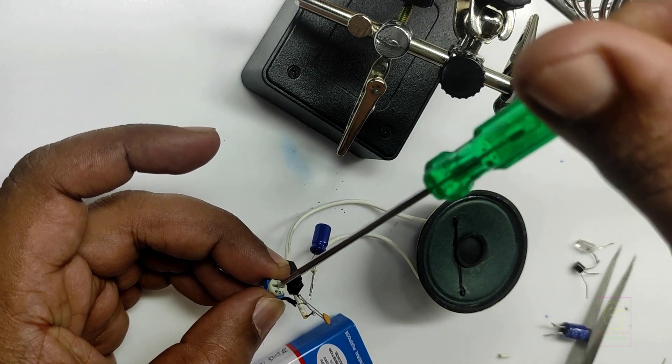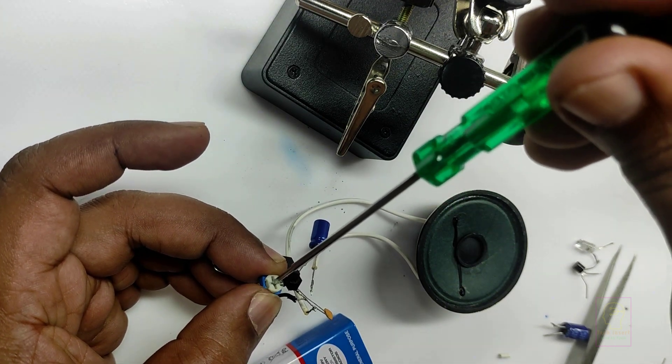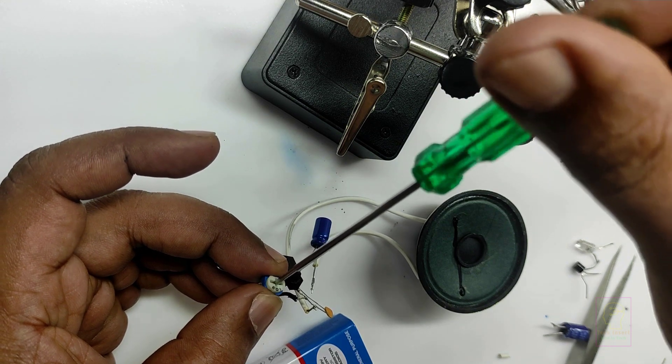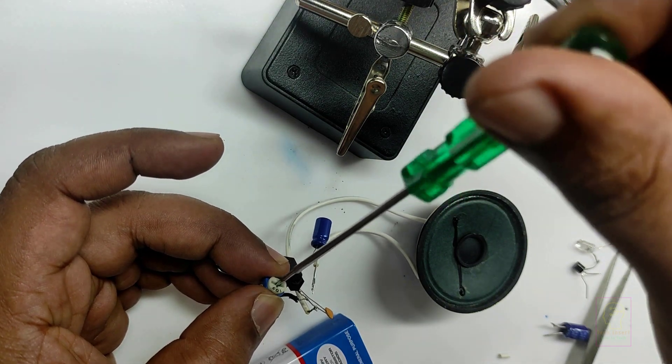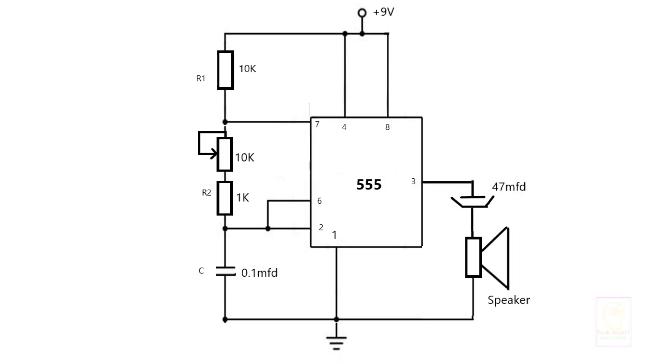Hi all, welcome to the new episode of Tech Insert. Today we are going to assemble an astable multivibrator for sounding purposes. This is the schematic of the 555 timer IC as a sound generator circuit.